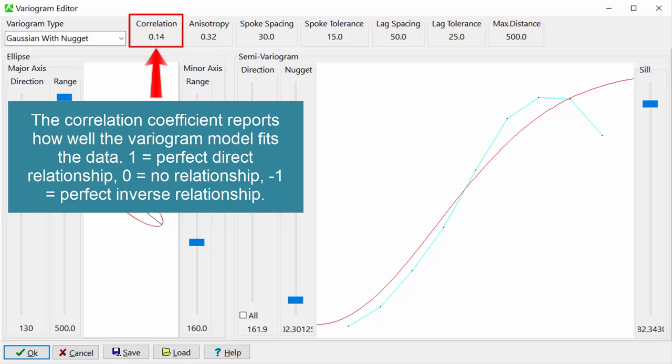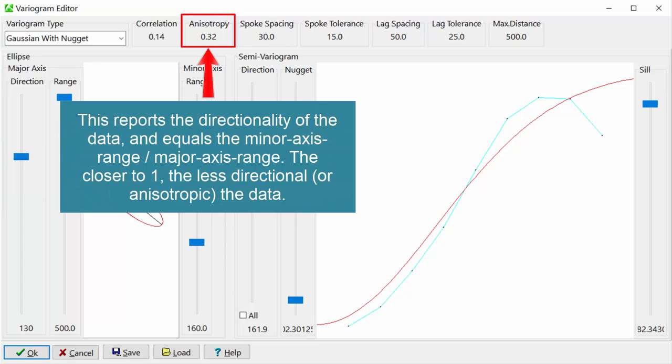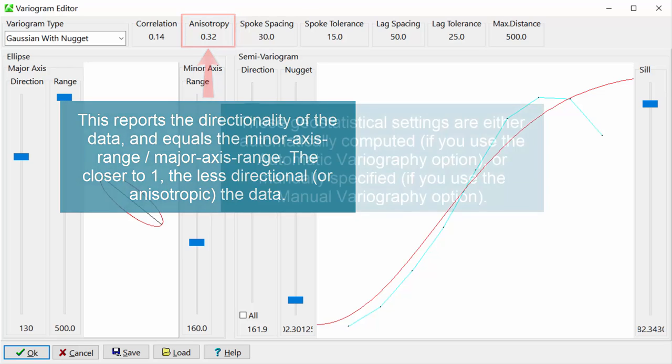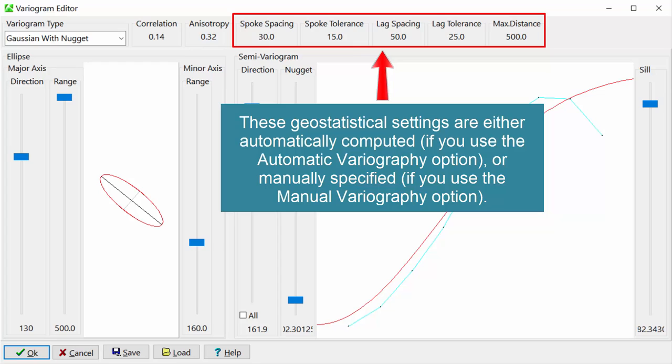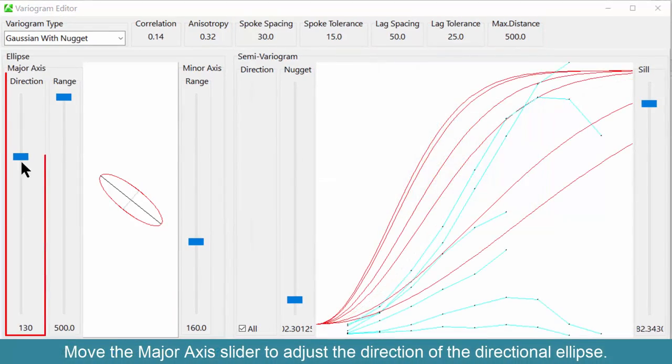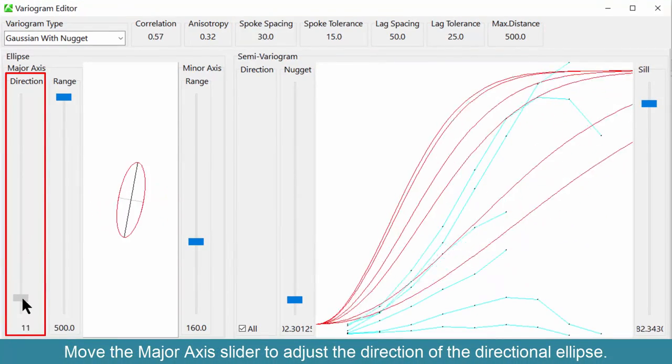A value of 1.0 represents a perfect direct relationship, 0 means no relationship, and minus 1 means a perfect inverse relationship. This reports the directionality of the data and equals the minor axis range divided by the major axis range. The closer to 1, the less directional or anisotropic the data. These geostatistical settings are either automatically computed if you use the automatic variography option, or manually specified if you use the manual variography option.